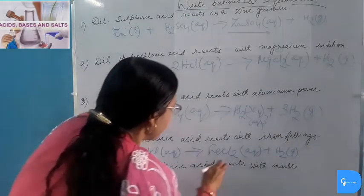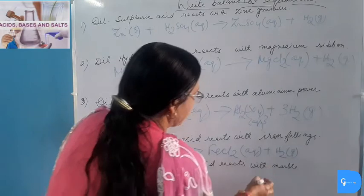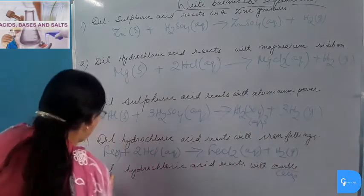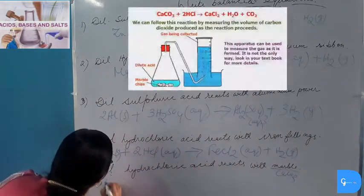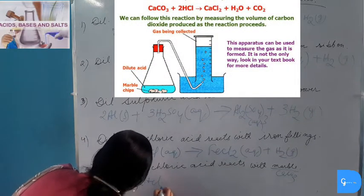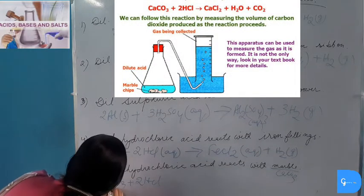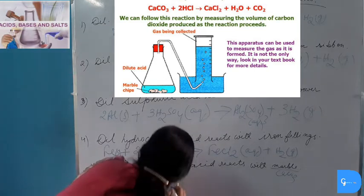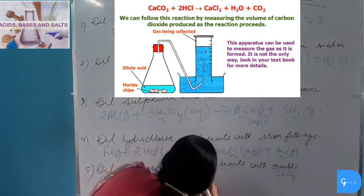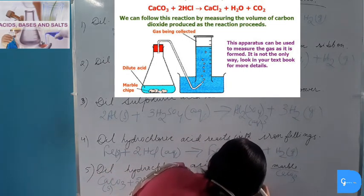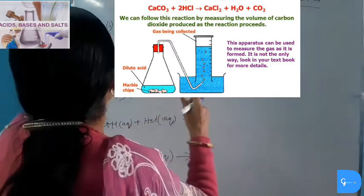Dilute Hydrochloric Acid reacts with Marble. Marble is a form of Calcium Carbonate. So CaCO₃(s) + 2HCl(aq) → Calcium Chloride plus water plus CO₂. Complete and balance the equation.